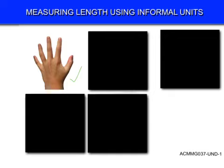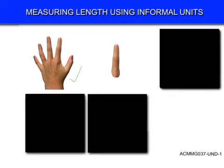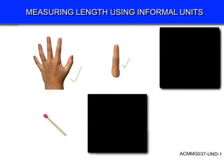Let's have a look at the next one — a finger. Now, you wouldn't just have a finger by itself; obviously it would be part of your hand. But do you think you could use your finger to measure the length of an object? Yes, you could. How about this next one? This is a matchstick. Do you think you could use a matchstick to measure or compare the length of different objects? Yes, a matchstick could be used as an informal unit of measuring.